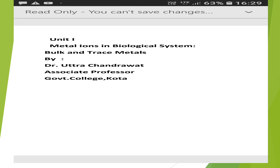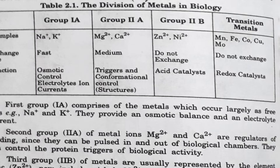Hello students, I welcome you to this e-class on the topic 'Role of Metal Ions in Biological Processes.' In the past lecture we went through the classification of metal ions as bulk and trace elements and saw the criteria for elements to be essential for physiological processes. Today we will discuss their role in biological processes.